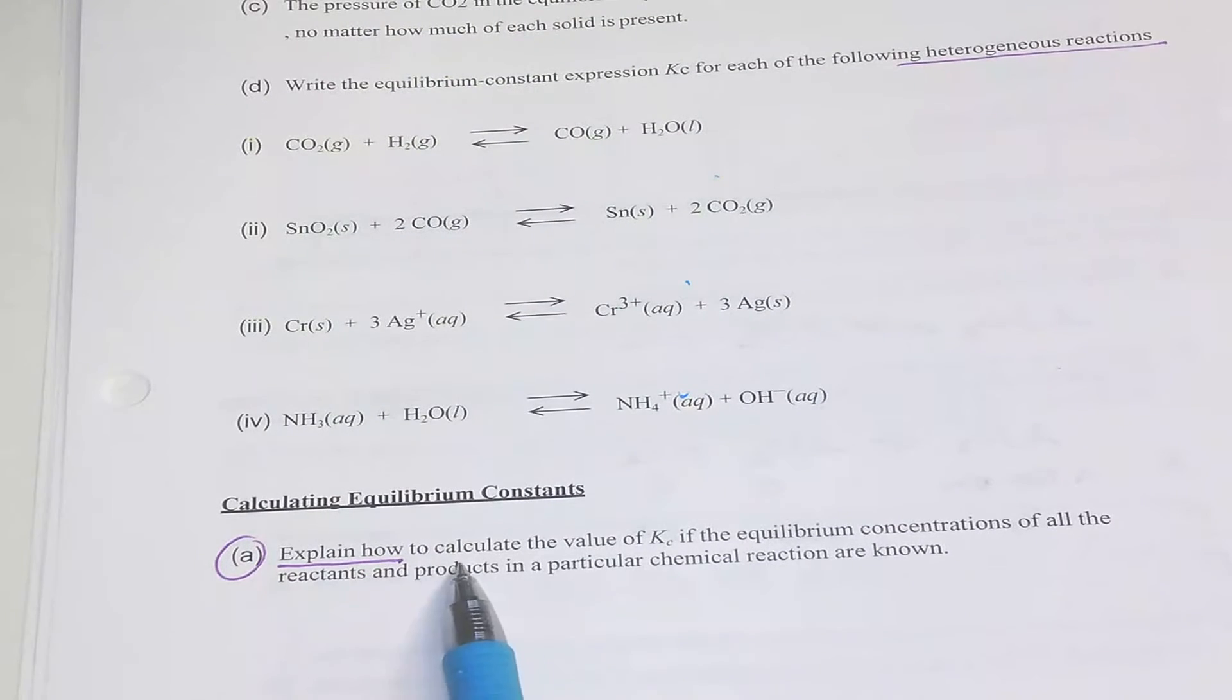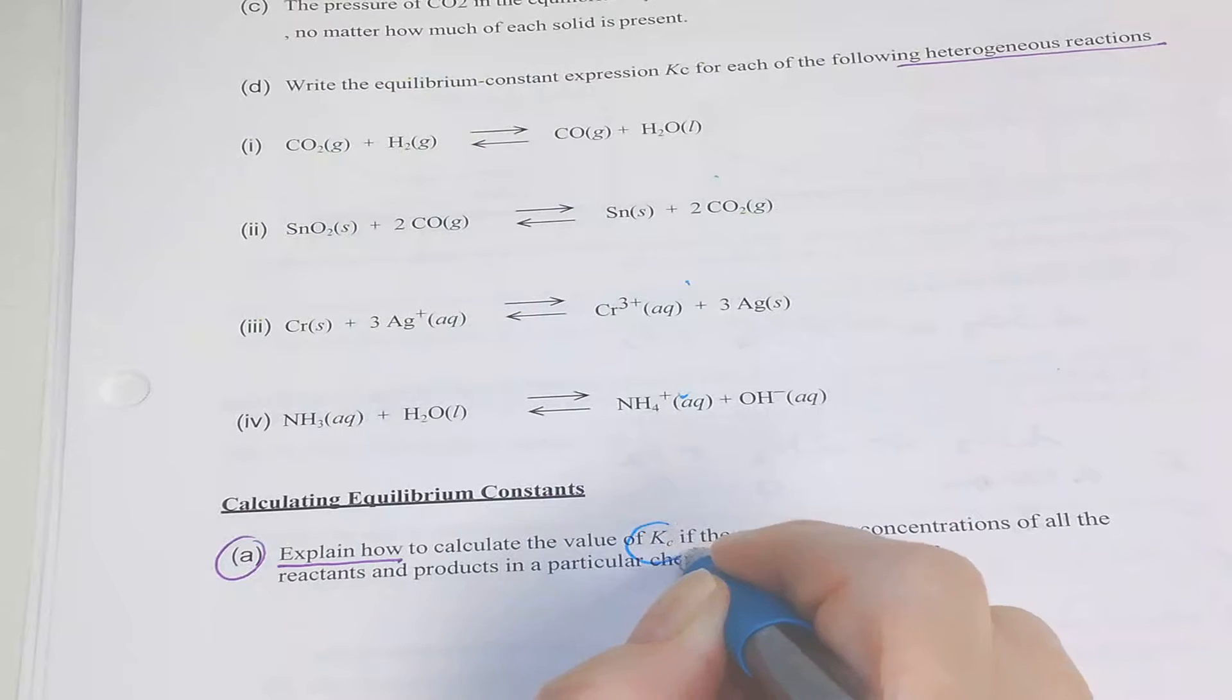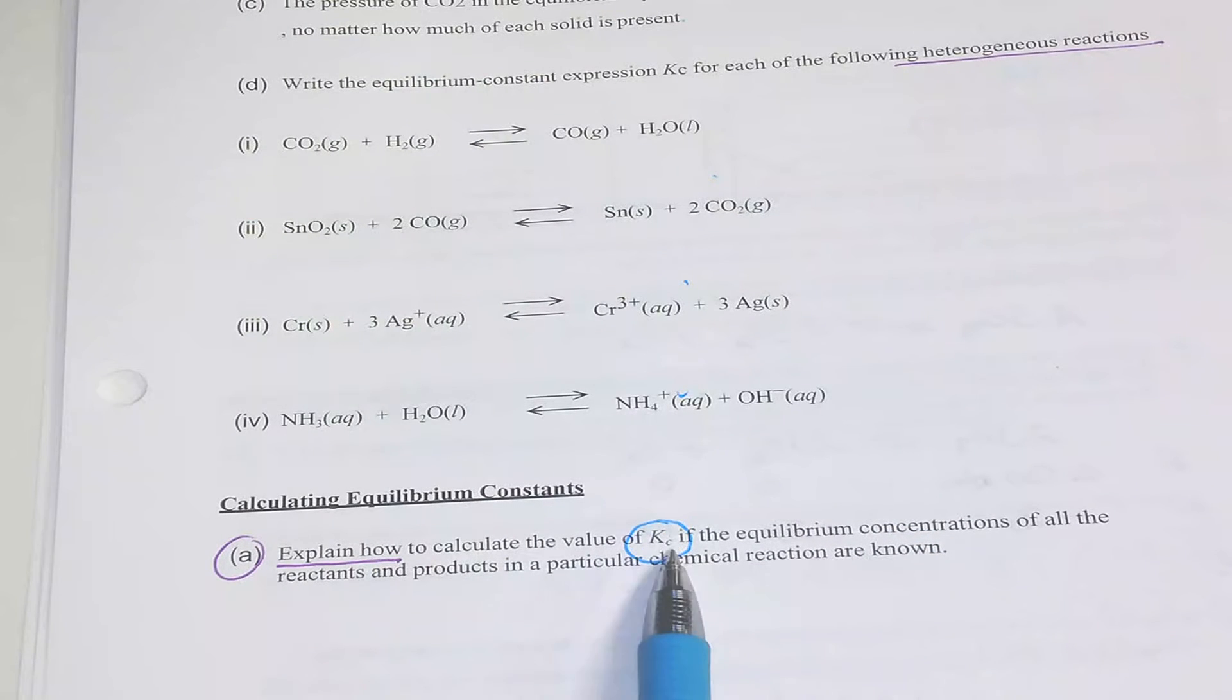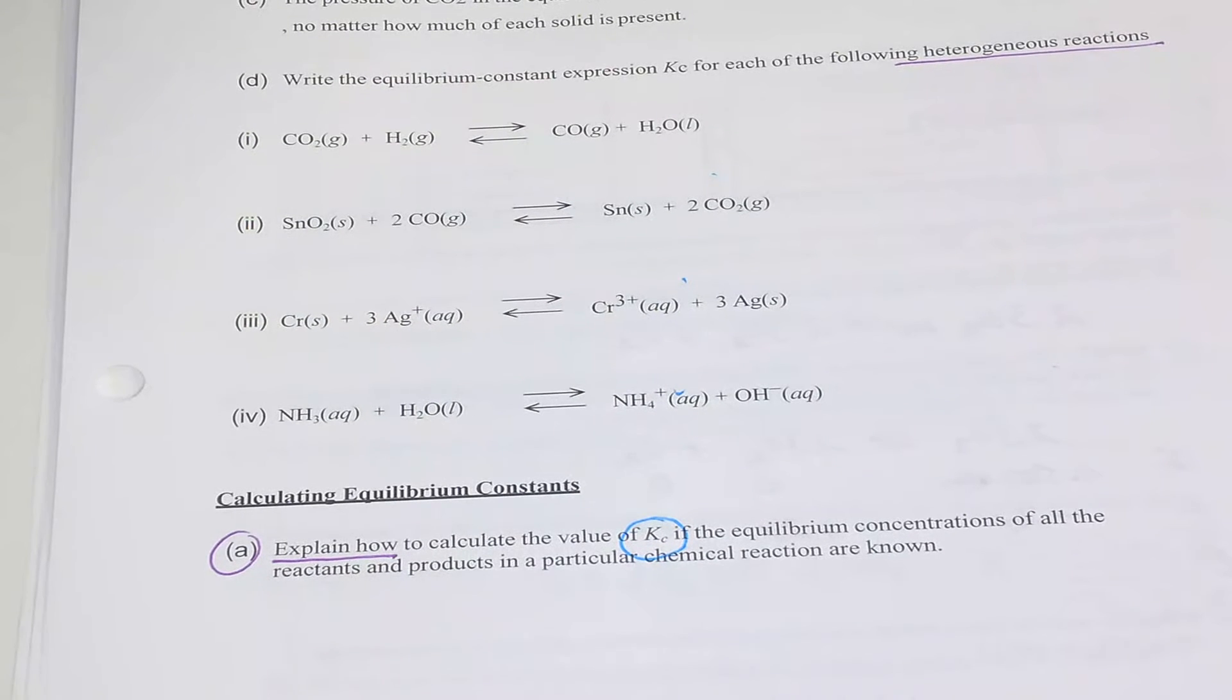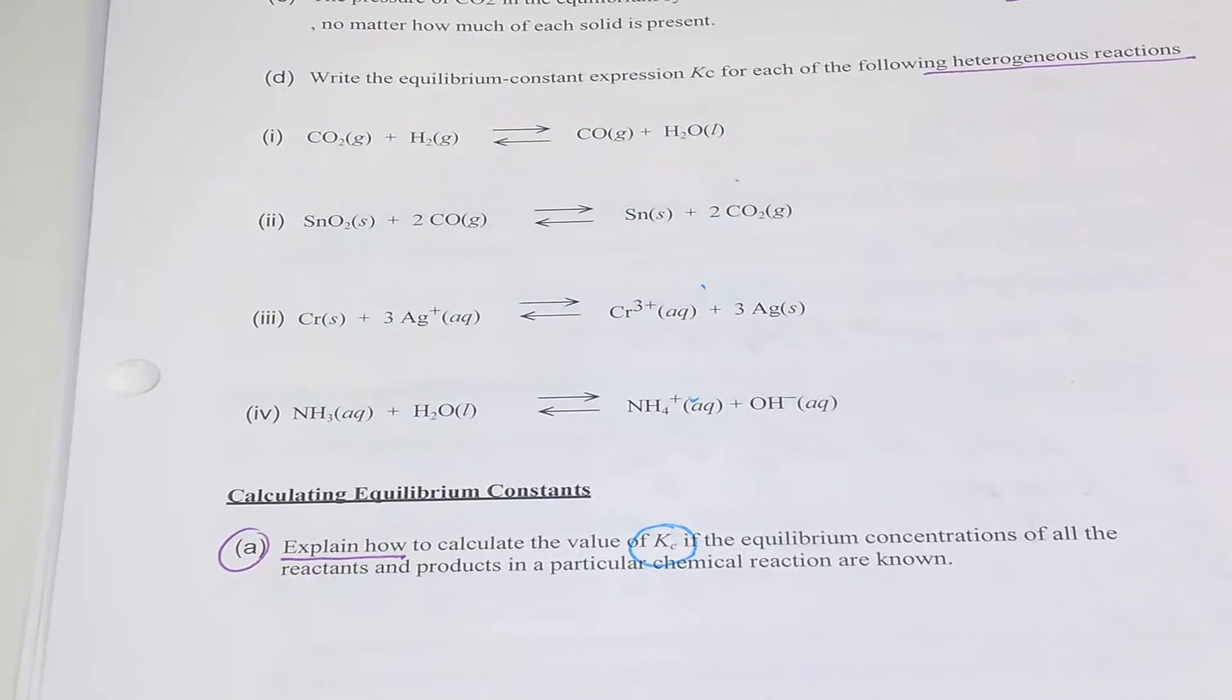See if you can explain how you're going to calculate the value of K if you have the concentration of all reactants and products. That's a pretty simple math to be able to do. That's your first level of equilibrium problems.